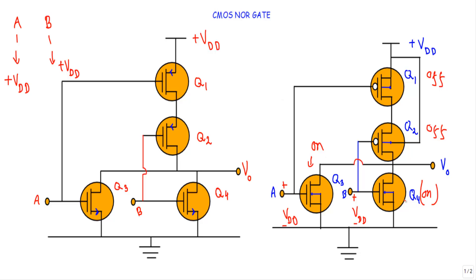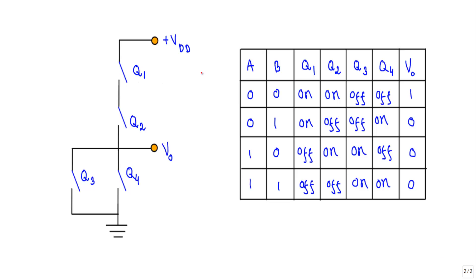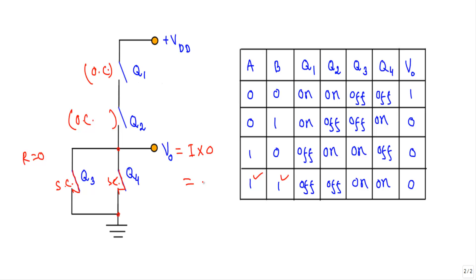For input 1,1: Q3 and Q4 are ON, Q1 and Q2 are OFF. Replacing: Q1 and Q2 = open circuits, Q3 and Q4 = short circuits. There is a complete short circuit from the output terminal to ground. The resistance is zero, so by Ohm's law the output voltage is zero — logic 0. This is the truth table of the CMOS NOR gate and the switching states of the transistors.